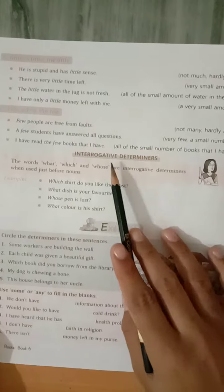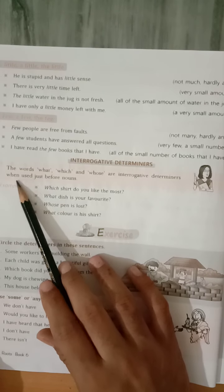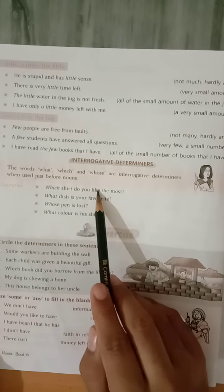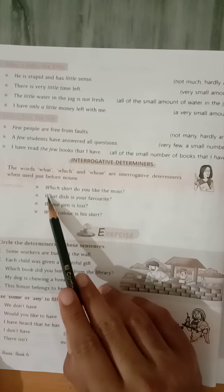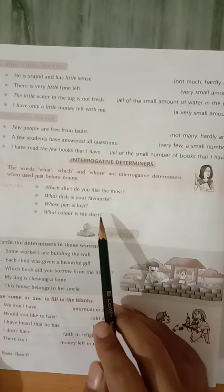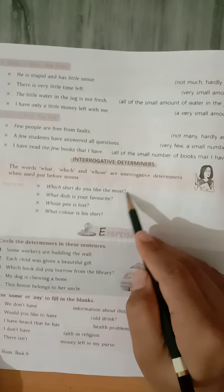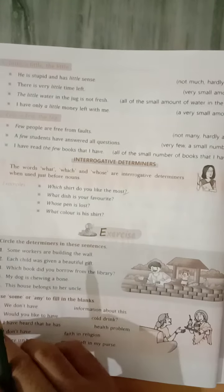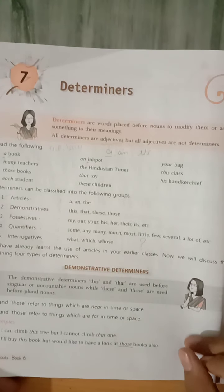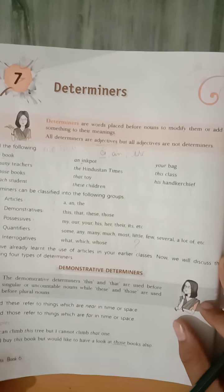The words 'what', 'which', and 'whose' are interrogative determiners when used just before a noun. Examples: 'Which shirt do you like?', 'What dish is your favorite?', 'Whose pen is lost?', 'What color is his shirt?' So your chapter has been completed. Read it at home so you will understand what was explained today. Thank you.